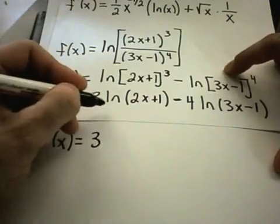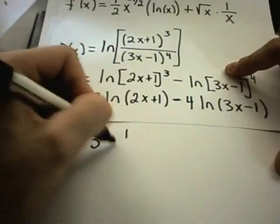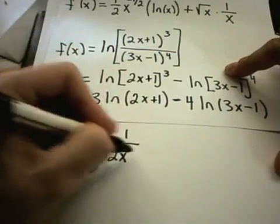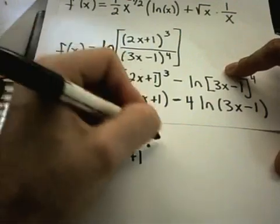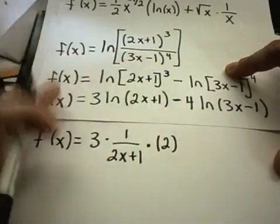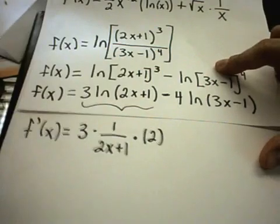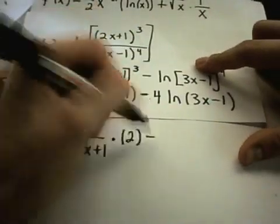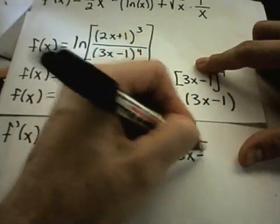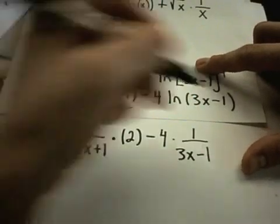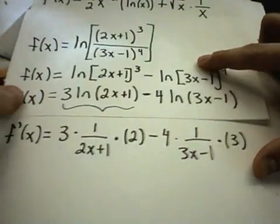Okay, the 3 is just going to come along for the ride. The derivative of ln of 2x plus 1. Well, I get 1 over the stuff, so 1 over 2x plus 1. And then I multiply that by the derivative of the inside, which is times 2. So now I've taken the derivative of the first part. And I'll do the same thing for the second one. Times 1 over 3x minus 1. And then again, I have to multiply that by the derivative of the inside, which is just going to be multiplied by 3.